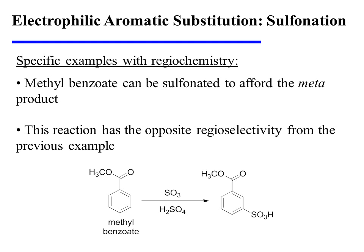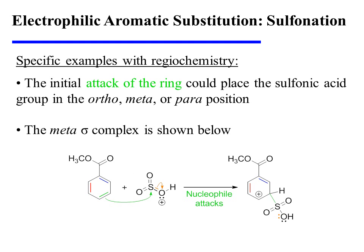Now let's consider the sulfonation of methyl benzoate, which affords the meta-substituted product. Notice that this reaction has the opposite regioselectivity from the previous example. The initial attack of the ring on the potent electrophile could place the sulfonic acid group in the ortho, meta, or para position. The meta-sigma complex is shown here.